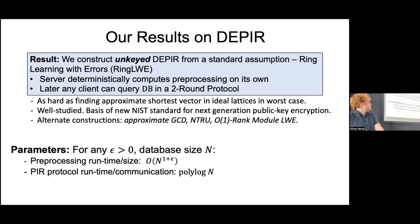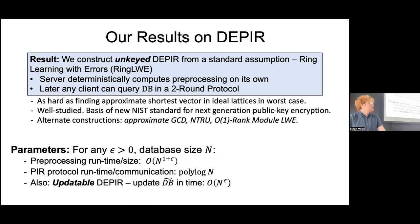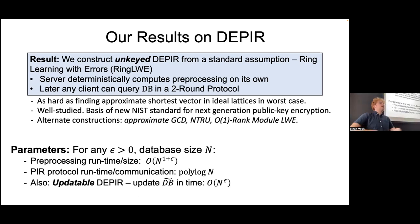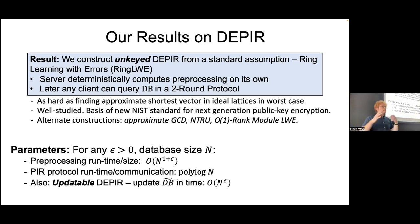We also provide a notion of updatable DPIR, where a client or anyone makes some public update to the database, and there's a fast way to update the database so that future DPIR queries can proceed after an update occurs. What we achieve is updates in N-to-the-epsilon time.